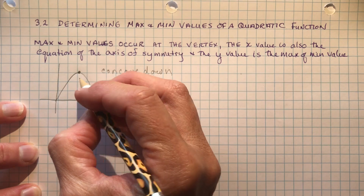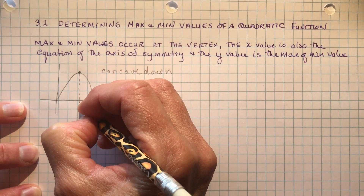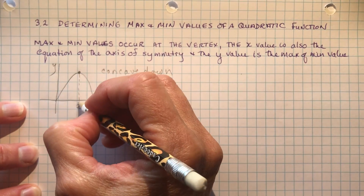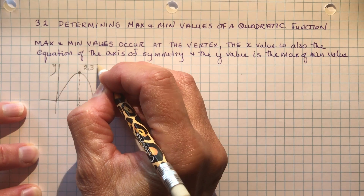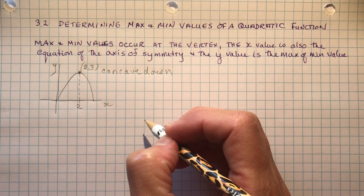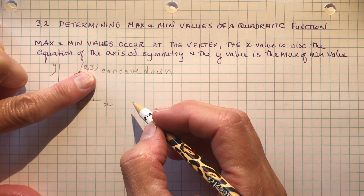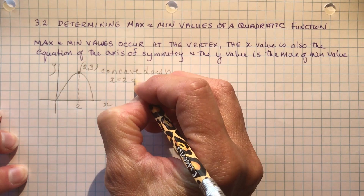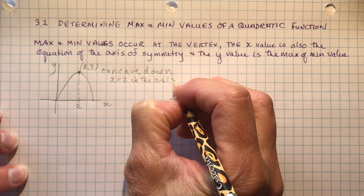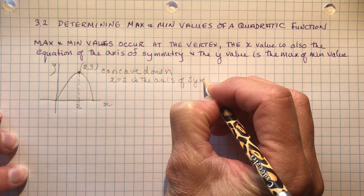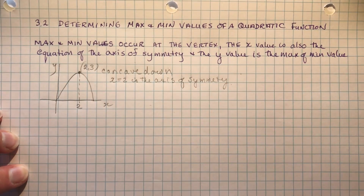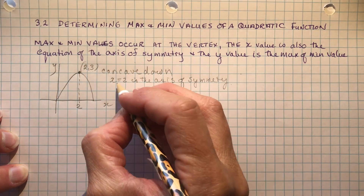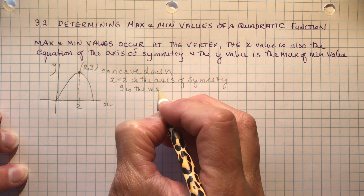When it's concave down, you have a maximum value. And if this was the axis of symmetry here, going by units of 1, that would mean this point here would be (2, 3). So x equals 2 would be the equation of the axis of symmetry, and 3 would be the maximum height. You always want to know where the axis of symmetry is. If you're just given the quadratic in vertex form, all you have to do is look at the coordinates — 2 is the axis of symmetry, 3 is the maximum height.